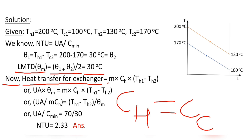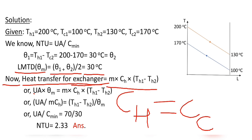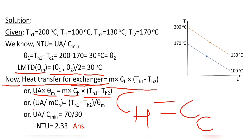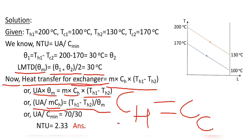Equating heat transfer for the given heat exchanger to the heat loss by the hot fluid: heat transfer equals UA·θM, so UA·θM equals MCH multiplied by (TH1 minus TH2). Rearranging gives UA divided by MCH equals (TH1 minus TH2) divided by θM. And since MCH equals MCmin, this becomes UA divided by Cmin.